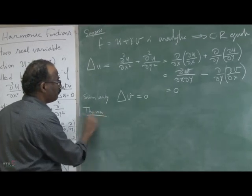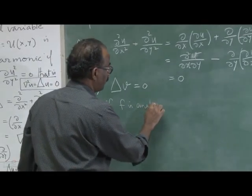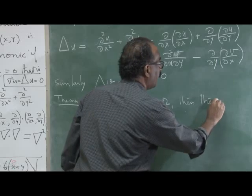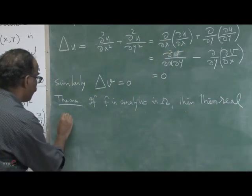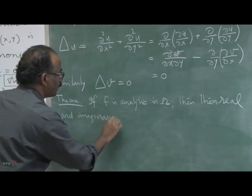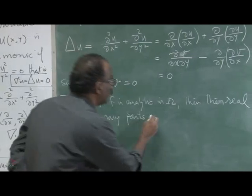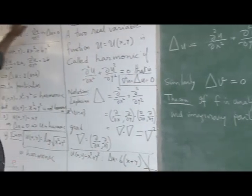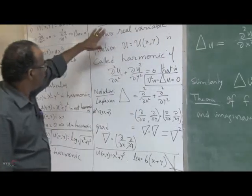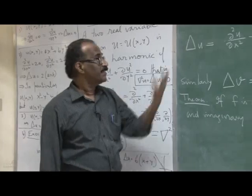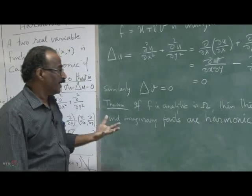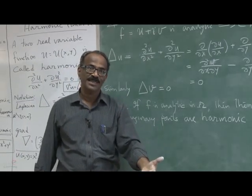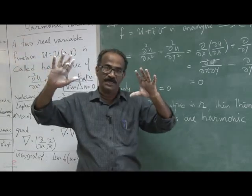This gives an immediate theorem: if f is analytic in a region omega, then the real and imaginary parts of f are harmonic. This means you cannot choose an arbitrary u and v as real-valued functions and expect f equals u plus iv to be analytic — both parts must be harmonic. Harmonic functions have many powerful properties, and in fact a harmonic function determines an analytic function. Given one harmonic part, you can determine the other, up to a constant.